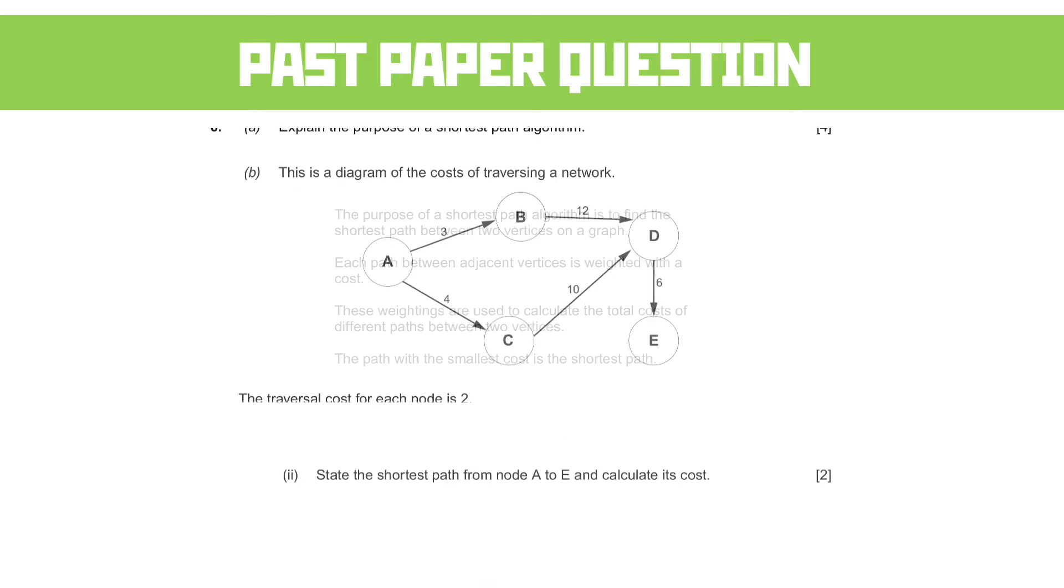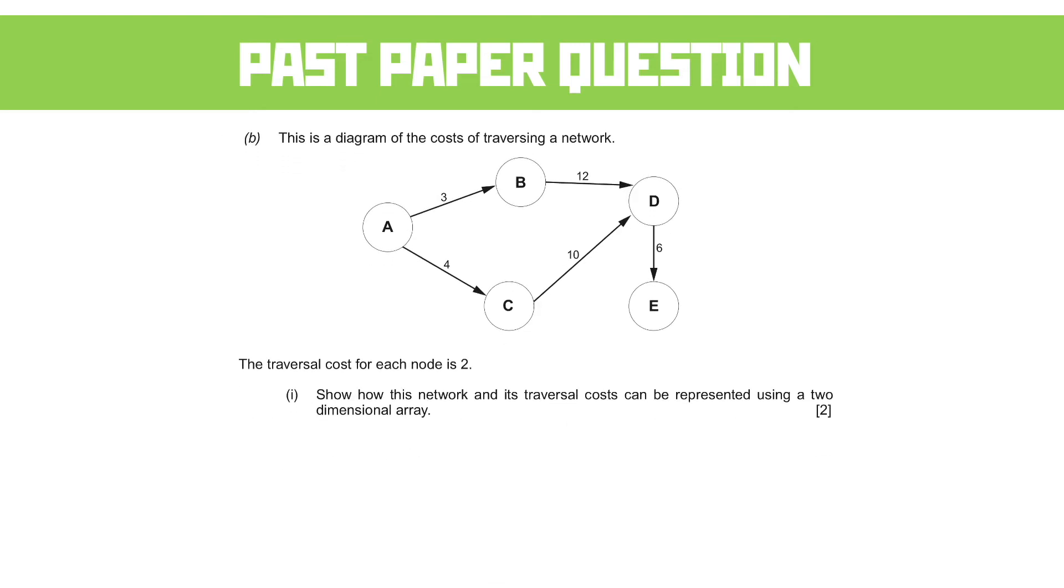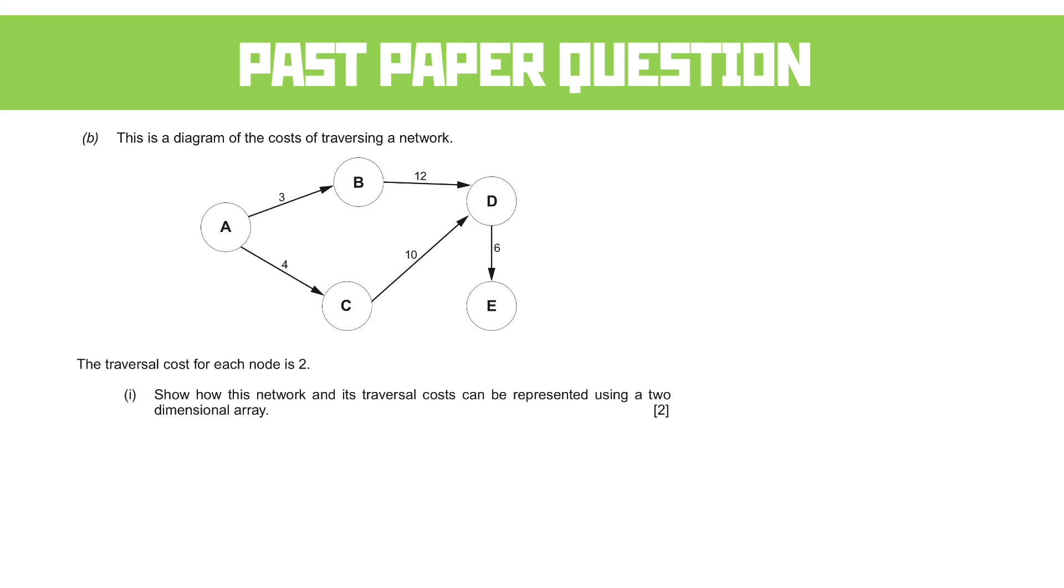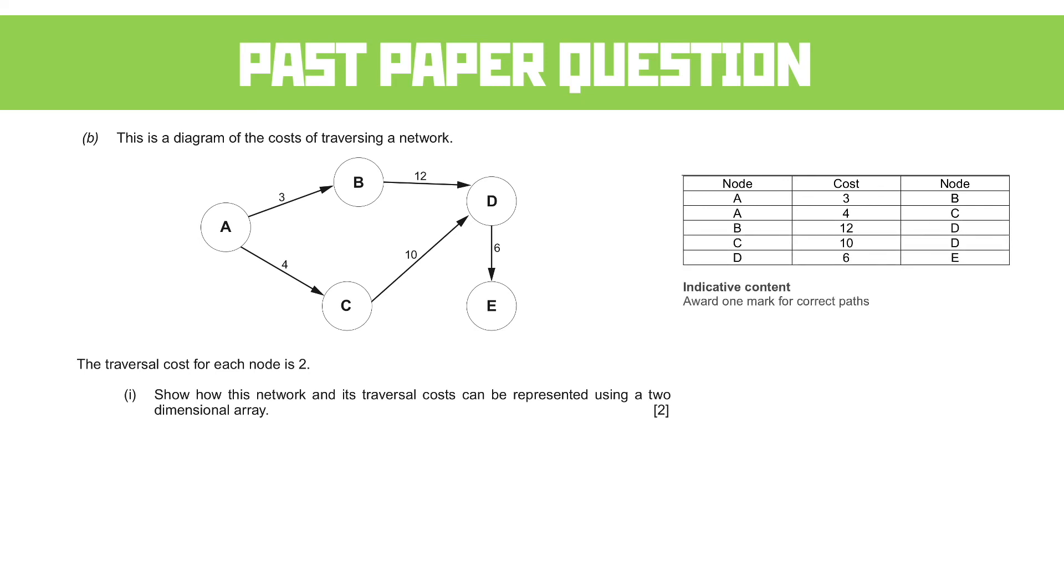Part B. Here's a diagram. Show how this network and its reversal costs can be represented using a 2D array. Presumably, all we're doing for this is showing the node, the cost, and from where it came. This was that first example. You can see a bit more of this if you go to section four. There's an entire subunit about this.